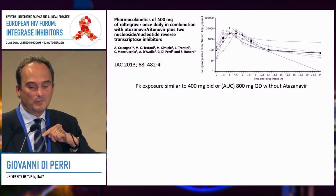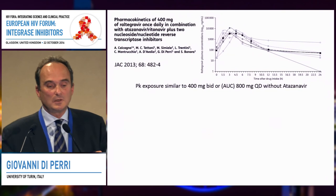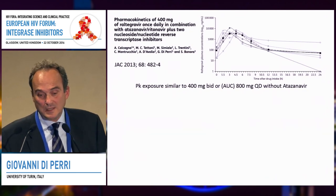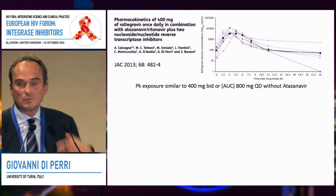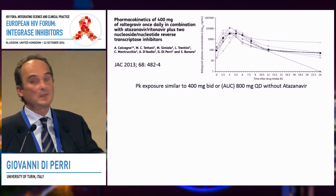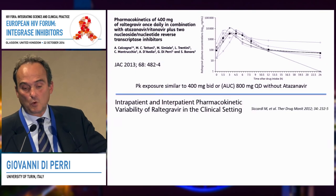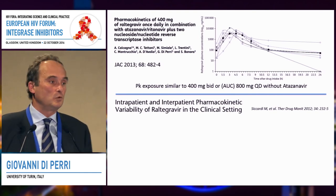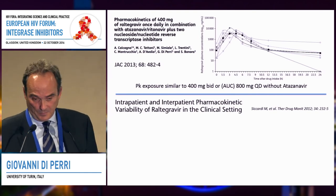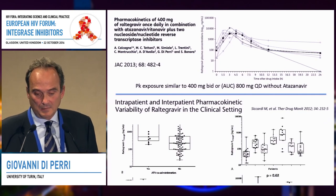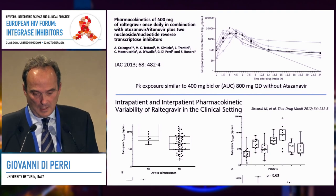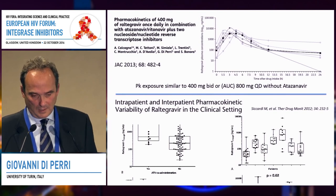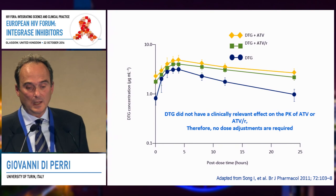Looking at the other side — instead of induction, we have inhibition — we know that atazanavir is an inhibitor of glucuronidation. We did some work in Torino to see whether there was some advantage in using atazanavir with raltegravir once daily. When given with atazanavir, the exposure was more or less the same as with BID dosing. A similar experiment was done with colleagues in Liverpool, and further to inter-patient variability, there was a difference in exposure when given with atazanavir.